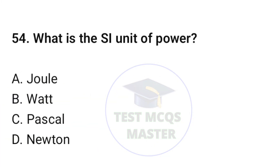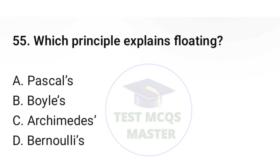Question number fifty-four: what is the SI unit of power? The correct option is B, watt. Question number fifty-five: which principle explains floating? The correct option is C, Archimedes.